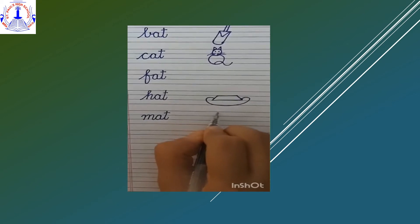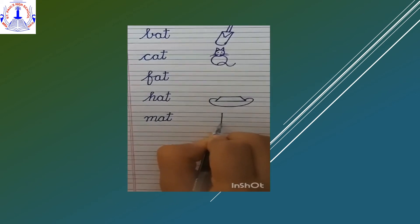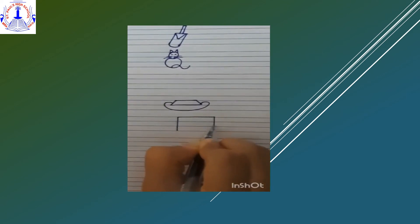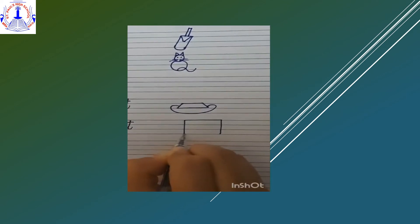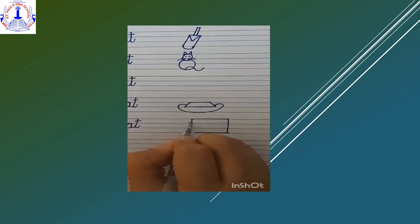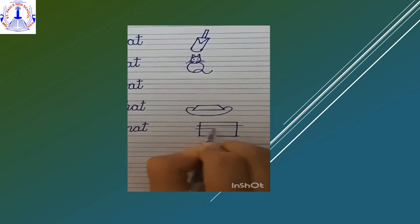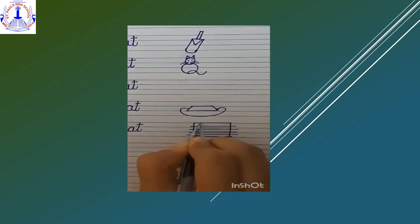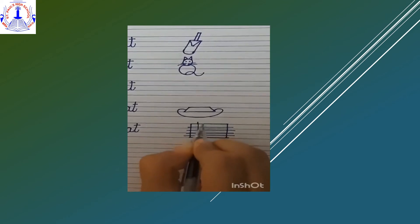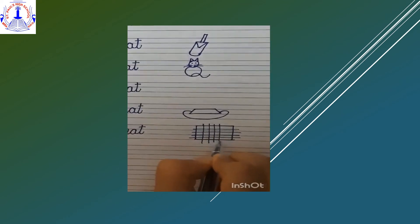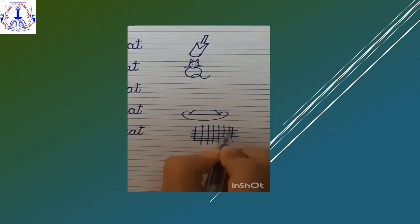Leave two finger space and draw two standing lines and two sleeping lines. Inside this rectangle, we will draw three to four sleeping lines and four to five standing lines. M-A-T, mat.